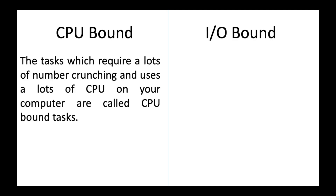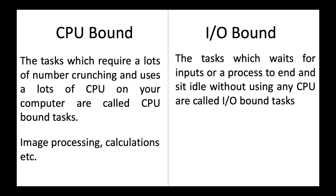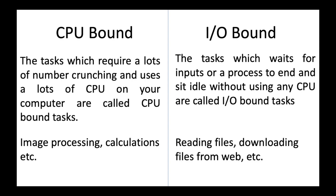The second topic is CPU bound tasks and IO bound tasks. Tasks which require a lot of number crunching and use a lot of CPU are called CPU bound tasks — examples include image processing and calculations. However, tasks which wait for input or a process to end and sit idle without using any CPU are called IO bound tasks — examples are reading files and downloading files from the web. Multiprocessing is mostly used for CPU bound tasks, and for IO bound tasks we generally use threading.